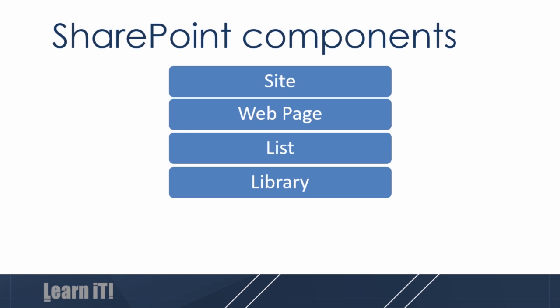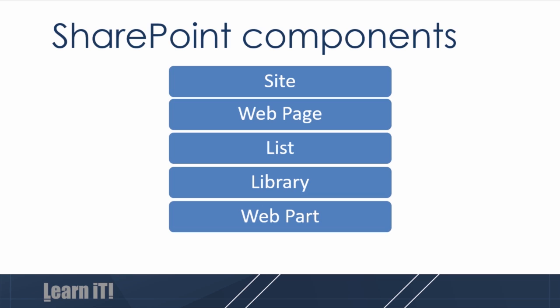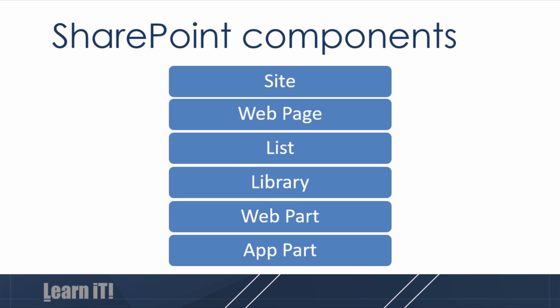So up until this point, you have a site. That site has pages, lists, and libraries. These are all separate components that haven't had an opportunity to talk to each other. To take all of this data floating around inside of a site and display it on a page, we need two different components. The first is the web part, which allows us to take data either within or outside of a SharePoint site and display it on a SharePoint webpage. The sixth core component is the app part, which can only pull data from within a SharePoint app.